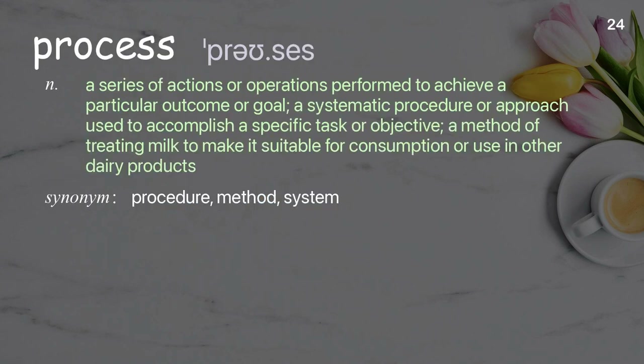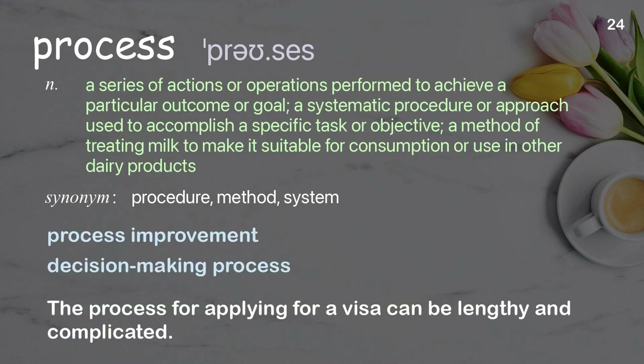Process: a series of actions or operations performed to achieve a particular outcome or goal; a systematic procedure or approach used to accomplish a specific task or objective. Examples: Process improvement. Decision-making process. The process for applying for a visa can be lengthy and complicated.